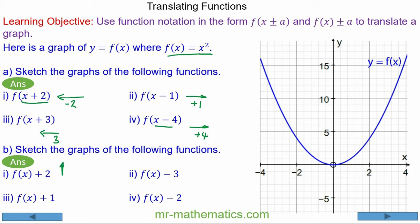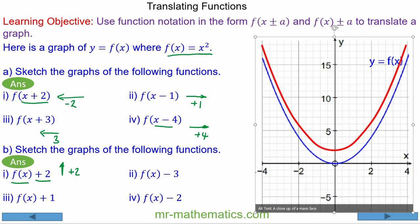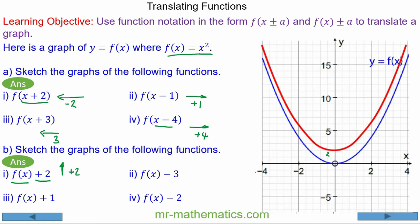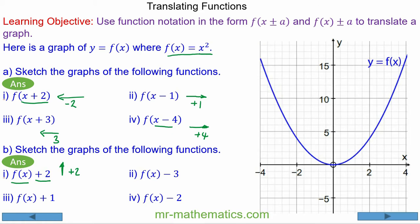Moving on, we're now going to perform a vertical translation where we're going to move the function up by 2 units, because the positive 2 is outside of f(x). You can see the graph has been moved vertically by 2 units.